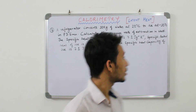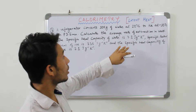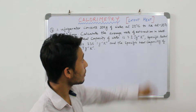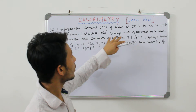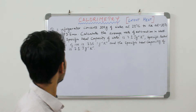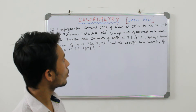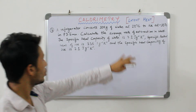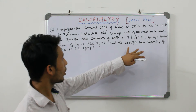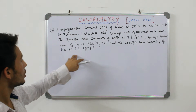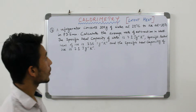The next problem: a refrigerator converts 100 grams of water at 20 degrees centigrade to ice at minus 10 degrees centigrade in 73.5 minutes. Calculate the average rate of heat extraction, i.e., power. Specific heat capacity of water is 4.2 joule per gram per kelvin, specific latent heat of ice is 336 joule per gram, and specific heat capacity of ice is 2.1 joule per gram per kelvin.